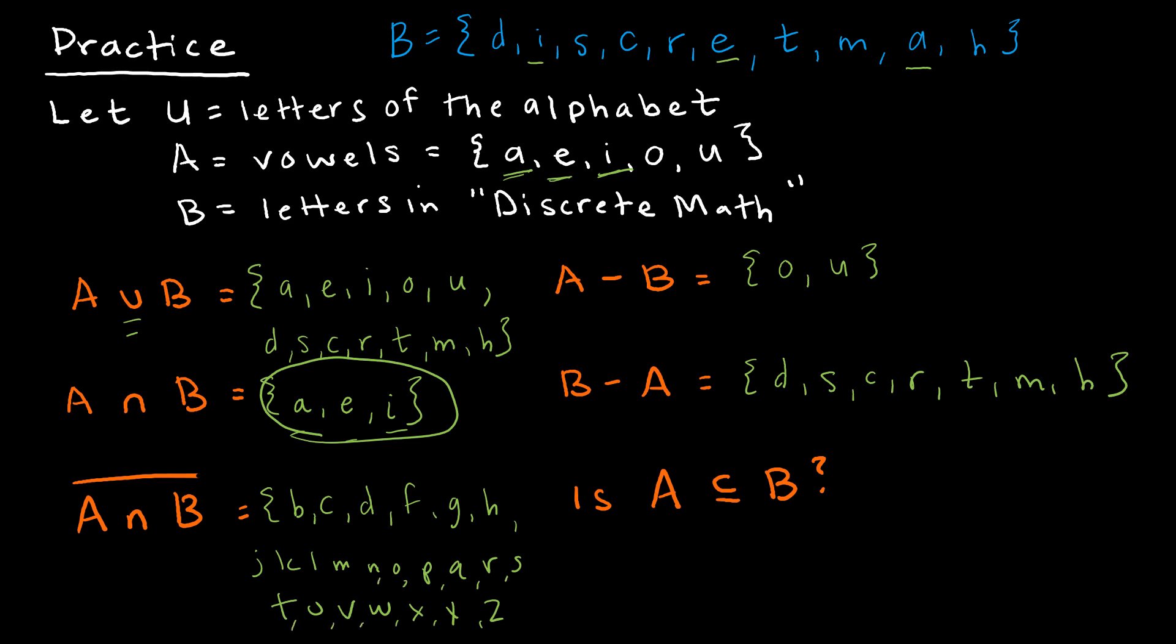And essentially that's all of the letters of the alphabet that are not contained in the intersection. So here was the intersection, A, E, I. It's all of the rest of the letters.